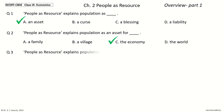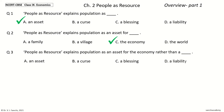Question 3: People as Resource explains Population as an Asset for the Economy rather than a ___. The options are: an asset, a curse, a blessing, a liability. Your time to choose. And the answer is: a Liability. So, People as Resource explains Population as an Asset for the Economy rather than a Liability.